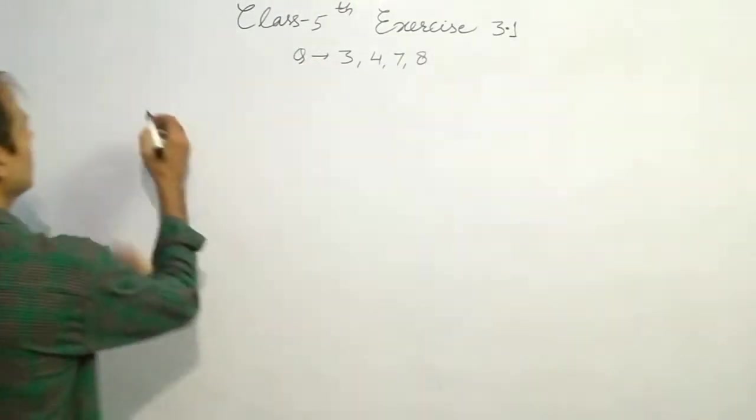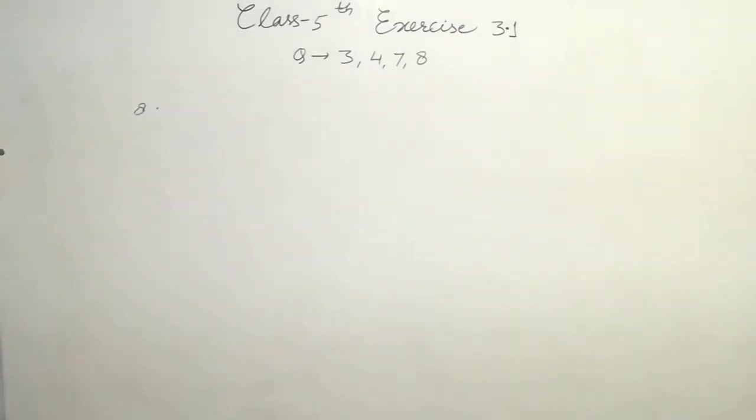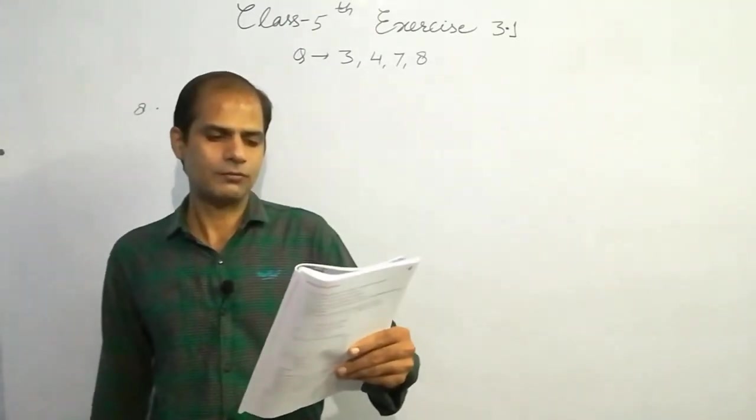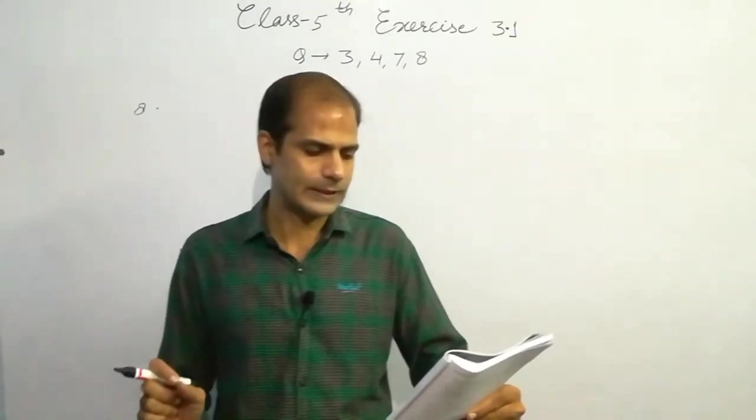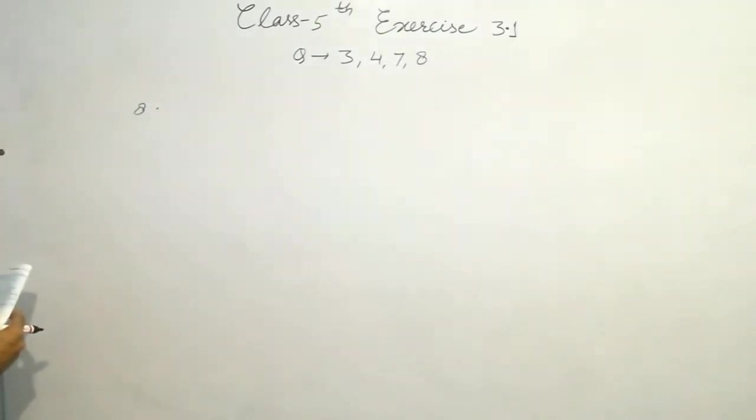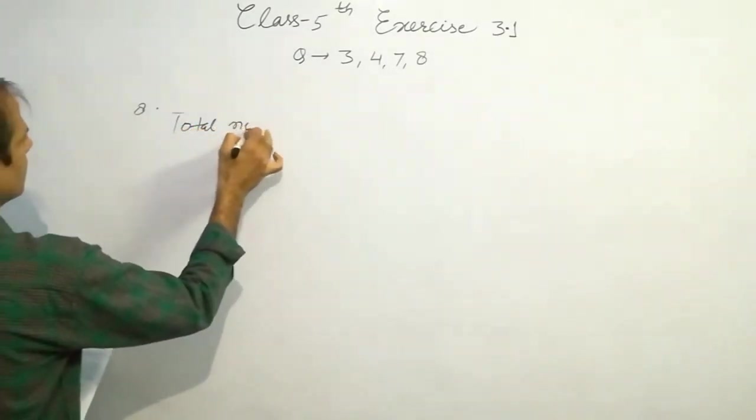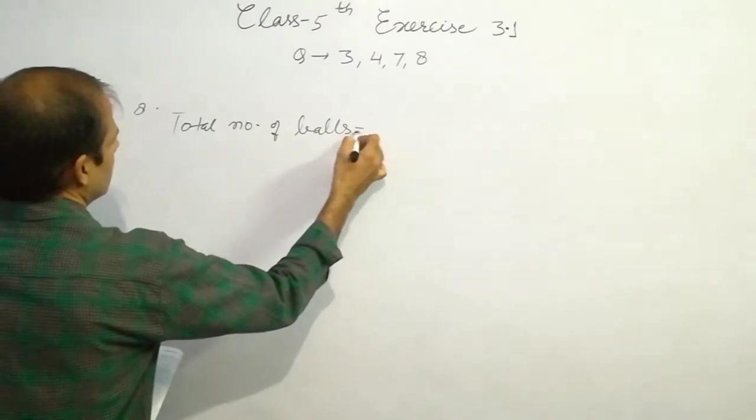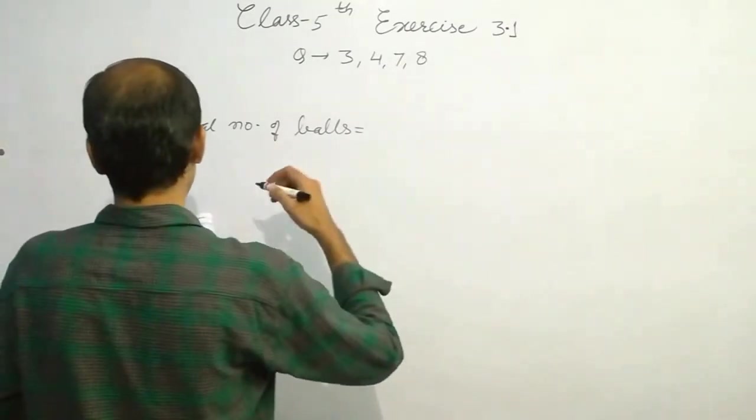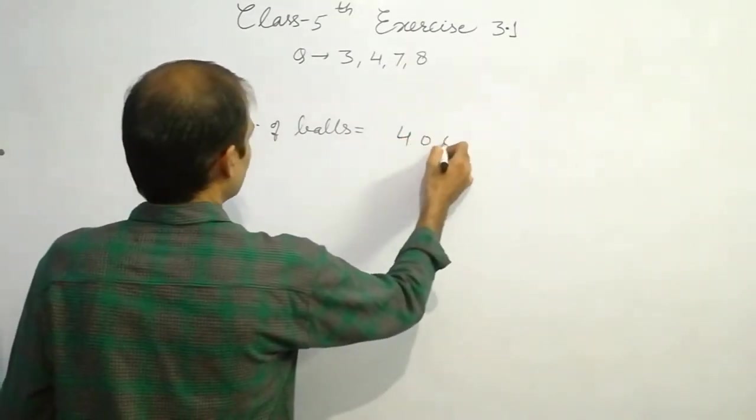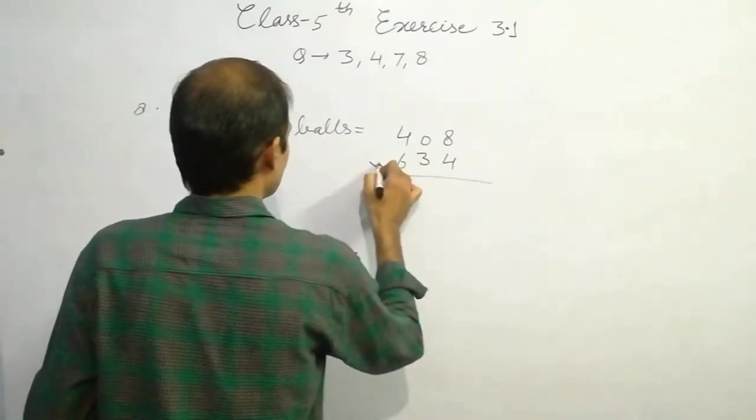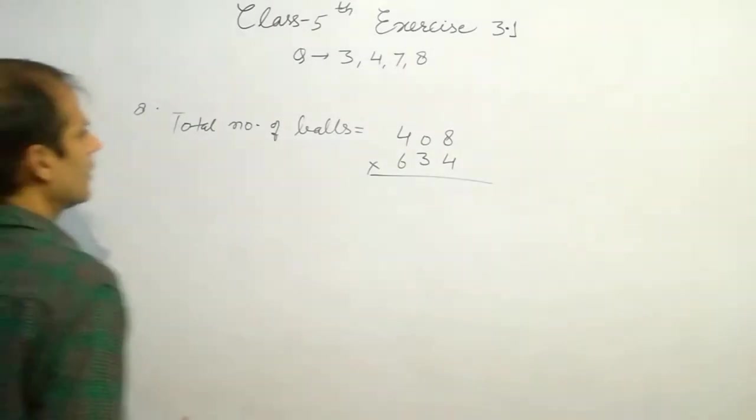Now question number 8. It is 408 balls can be filled in one box. Find the number of balls that can fill 634 boxes. So it is 408 and 634. Multiply. Now start multiplication.